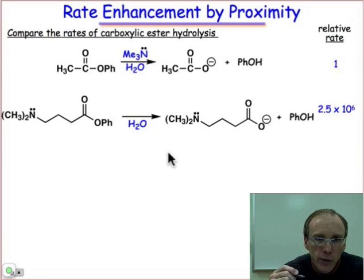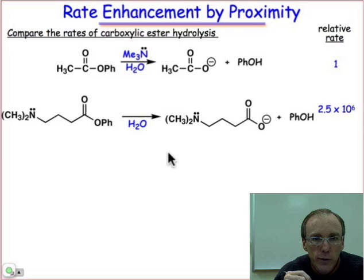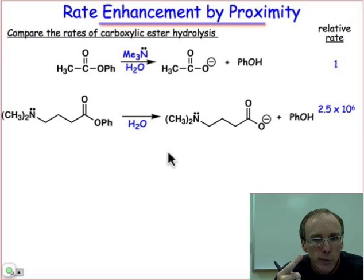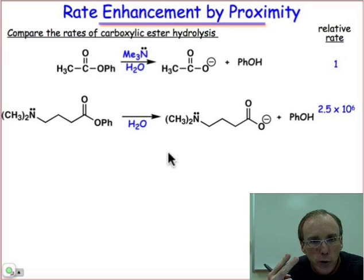In this webcast, what we want to do is take a look at the ways that enzymes bring about stability of the transition state relative to the substrate. There are basically two most important factors. One is known as proximity, also sometimes called effective molarity, and the second factor is known as orientation effects.